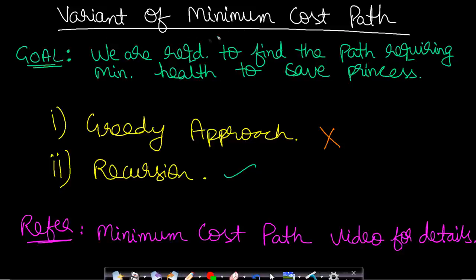This problem is a variant of the minimum cost path problem. The goal is to find the path requiring minimum health to save the princess. I've already explained a video on minimum cost path where I explained why greedy approach will not work and how recursion applies, but recursion takes much more time.